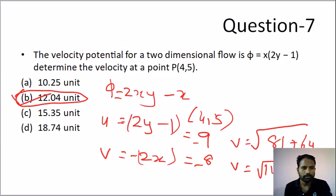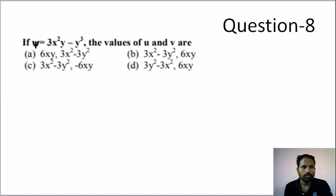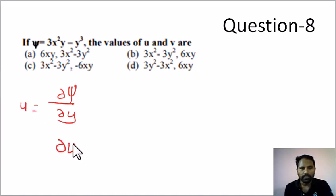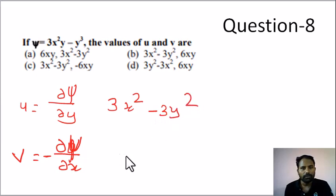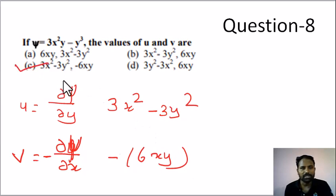This is the second question. If you look at this question, you can directly find u and v. If we differentiate psi with respect to y, then we get u: u = 3x² minus 3y². If we differentiate psi with respect to x, then we get v: v = 6xy. Option C is the correct answer.